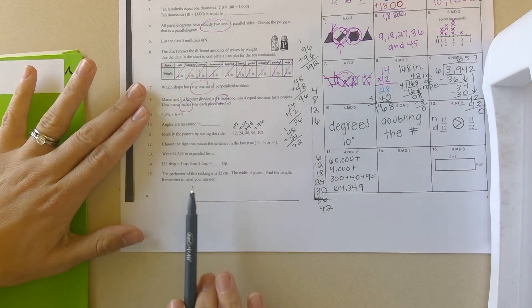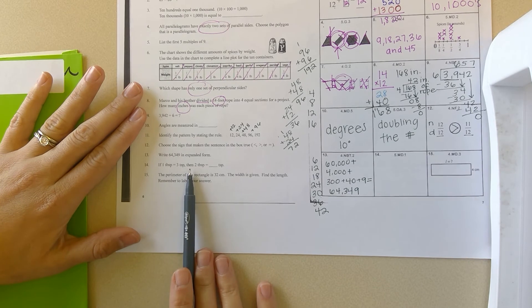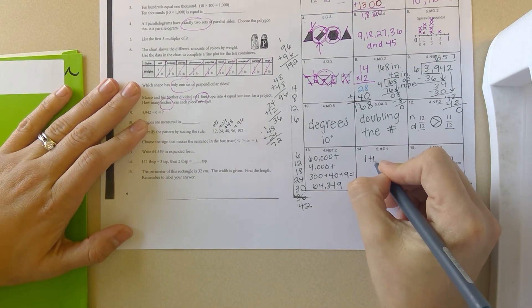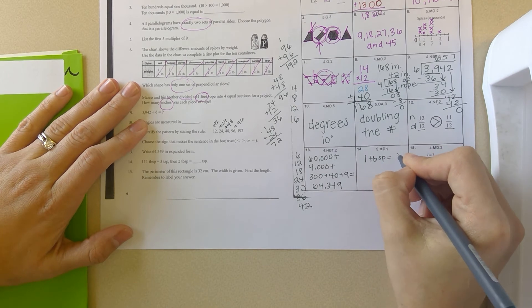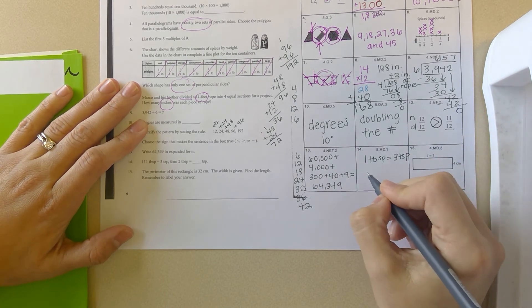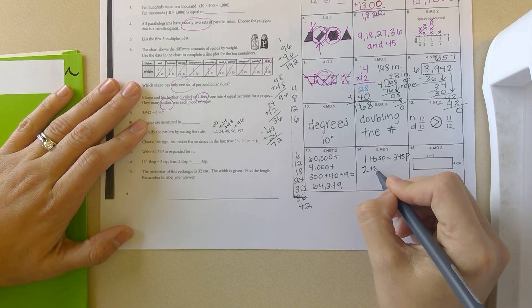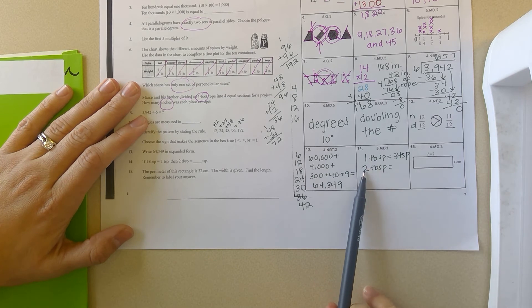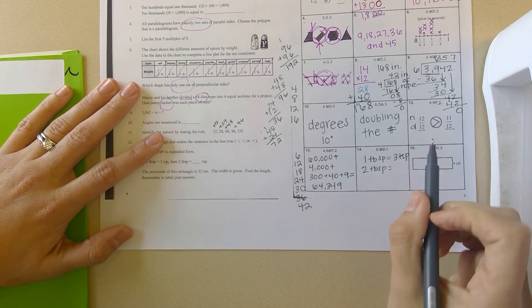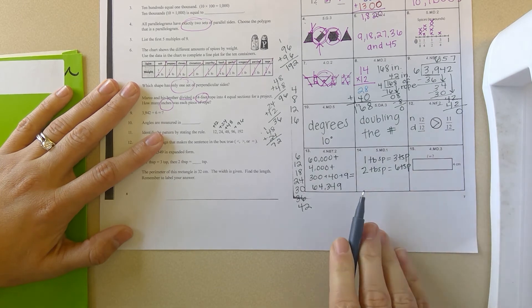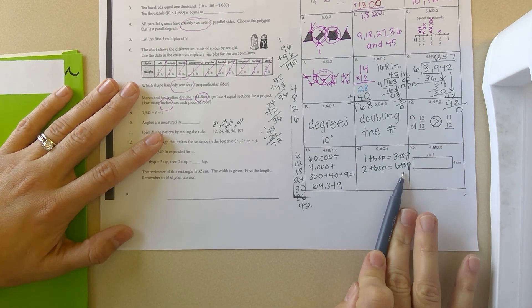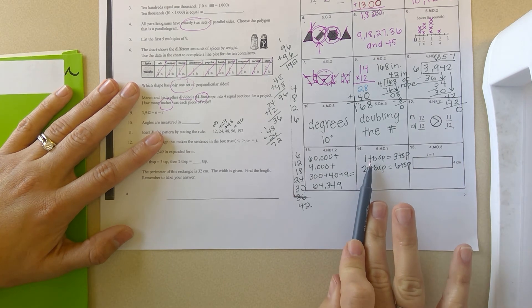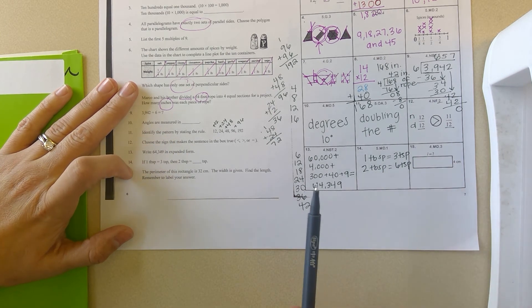All right, let's do fourteen. If one tablespoon is three teaspoons, then two tablespoons would be what? Well, if I know one tablespoon equals three teaspoons, but now they want to know two tablespoons would equal what? So it's basically saying one times two is two. So three times two would be six. So two tablespoons would be six teaspoons because they doubled the tablespoons, so I would double the teaspoons. So two tablespoons equals six teaspoons.